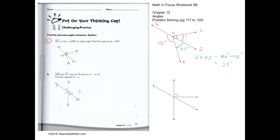We know that LHK is a right angle. So therefore angle LHJ will have to be 90 minus 25 degrees, which is 65 degrees. So the answer is 65 degrees.